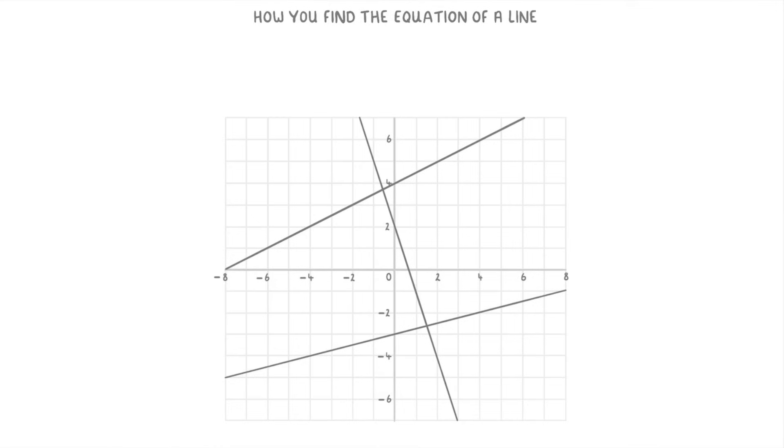In today's video we're looking at how to find the equation of a line when you're given that line on a graph like any of these three. The key idea is that we can write straight line equations in the form of y equals mx plus c, where m is the gradient of the line, so how steep it is, and c is the y-intercept, which is the point where the line crosses the y-axis.